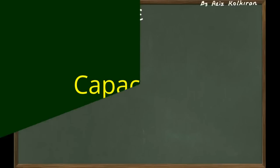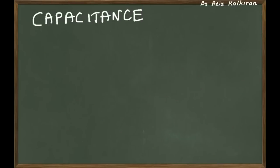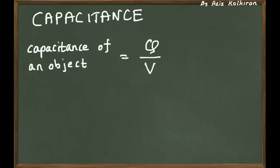Let me define what the capacitance is. The capacitance is defined by this ratio — the capacitance of a metal object. First of all, I have to clarify that the capacitance is only defined for metals.